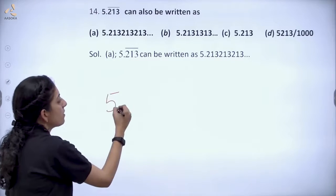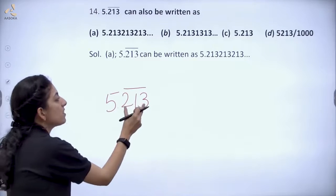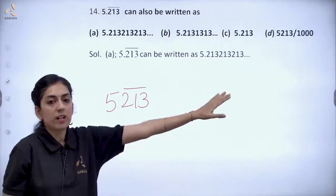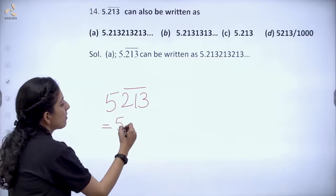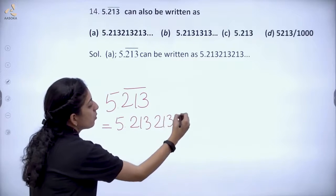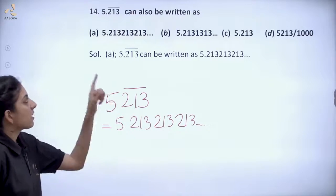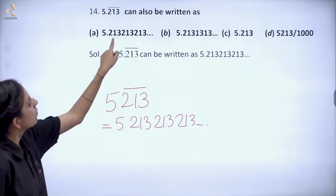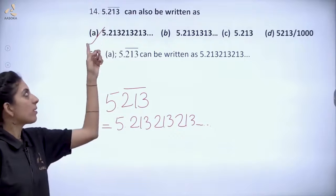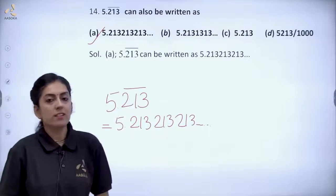5.213 bar — bar means the number 213 which is on the bar is repeatedly repeated. That means it will be 5.213213213213 and so on. You can see here 213 213 213 213. So yes, first A is the correct solution for this question.